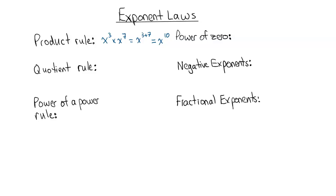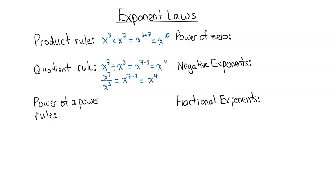What about the quotient rule? That says that if I have X to the power of seven and I'm dividing by the same base to another power, then I subtract those exponents. So in this case, it's seven minus three — X to the power of four. That could also be written as a fraction, and in that case it would be X to the seven minus three as well — X to the power of four. So both of those represent the exact same thing.